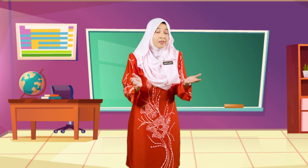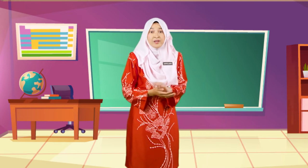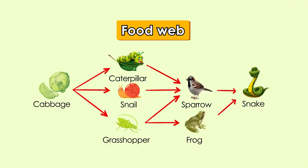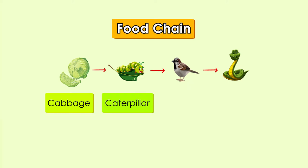Both the food chain and the food web show the food relationship between organisms in a habitat. The food web is a combination of more than one food chain. Let's look at a simple food chain on the screen. A head of cabbage is eaten by a caterpillar, which is then eaten by a sparrow, which is then eaten by a snake. The snake gets energy from the bird, the bird gets energy from the caterpillar, and the caterpillar gains energy from the cabbage.